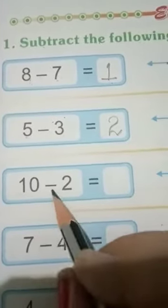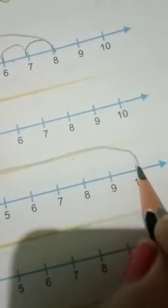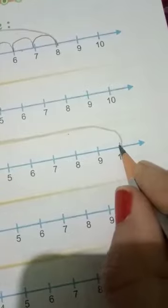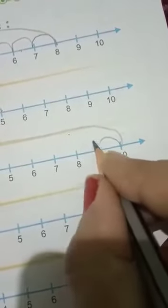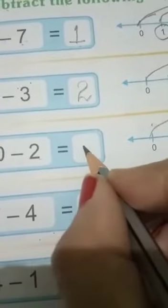10 minus 2. Okay. You will go from 0 to 10. 10 minus 2. 1, 2. Two steps back. Your answer is 8. Write down 8 in the box. 10 minus 2 is equal to 8.